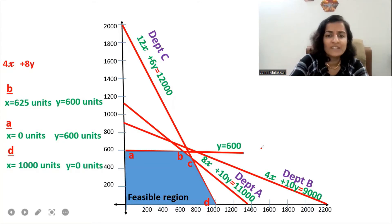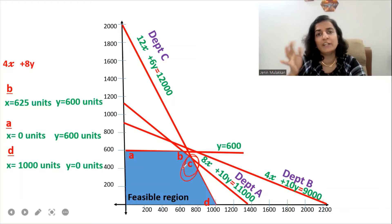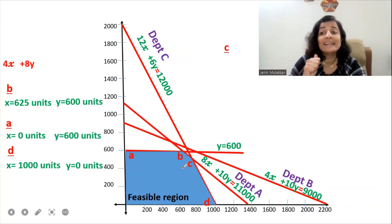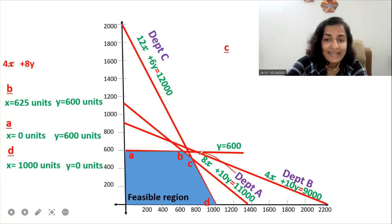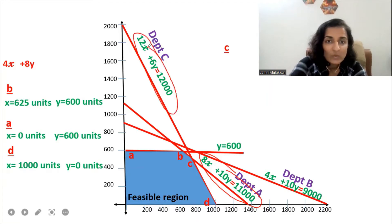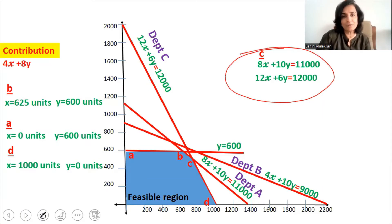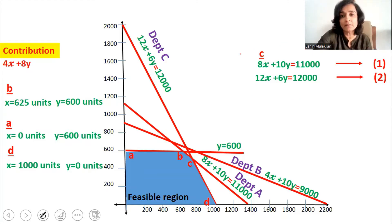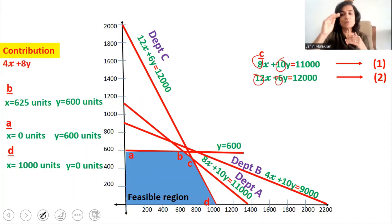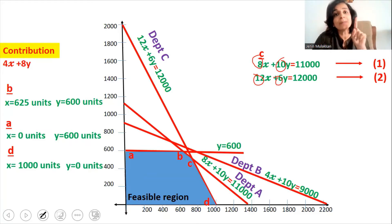Only point C is left. Point C is caused by the intersection of two lines: 8X plus 10Y equals 11,000 and 12X plus 6Y equals 12,000. To find the values of X and Y, we need to either make the coefficients of X the same or the coefficients of Y the same, so that when we subtract one equation from the other, one variable gets eliminated, leaving only one variable to solve.